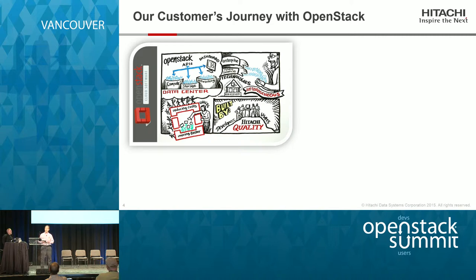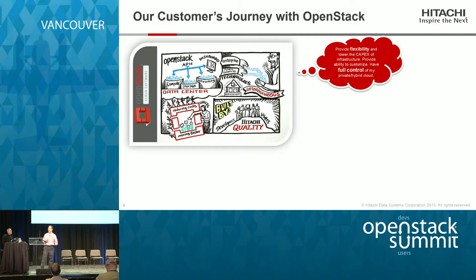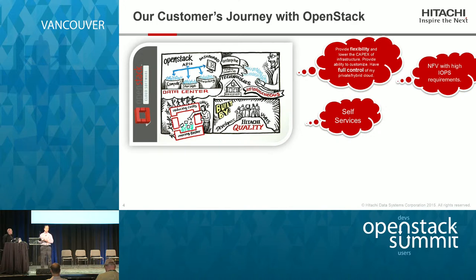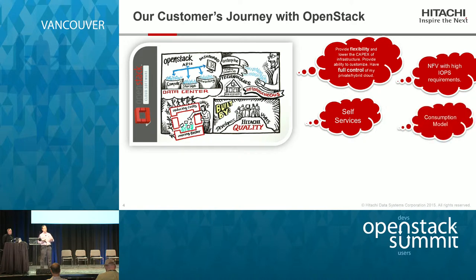In the last couple of years, we've been hearing more adoption with OpenStack. Here are some quotes from OpenStack users. They want more flexibility and more control on how to manage their cloud, and they want to reduce CapEx. Many are adopting NFV, which requires high IOPS, high performance, and enterprise qualities. Self-service portals and a consumption model — moving from traditional CapEx where you plan for maximum workload — to an OPEX model is transforming how people deploy cloud solutions, and OpenStack plays a key part of that.